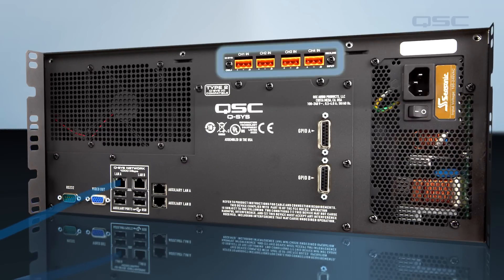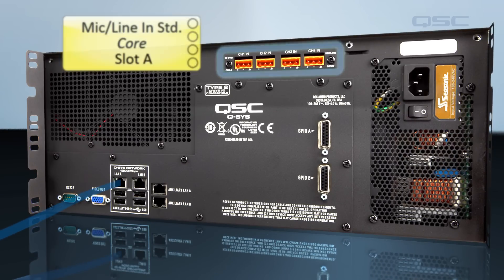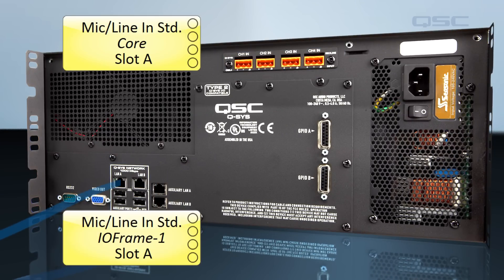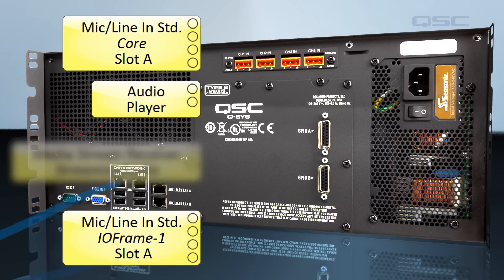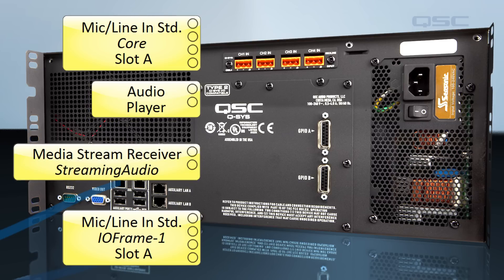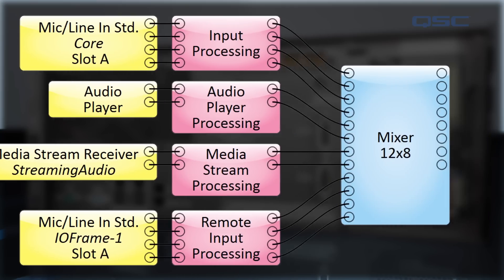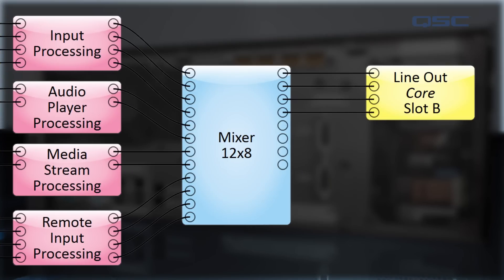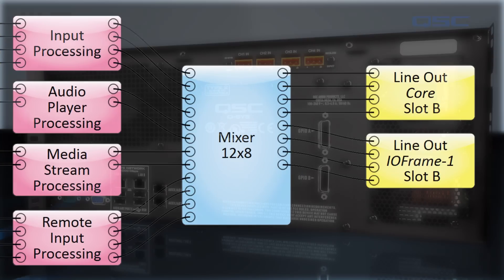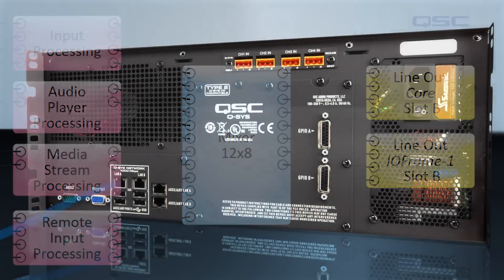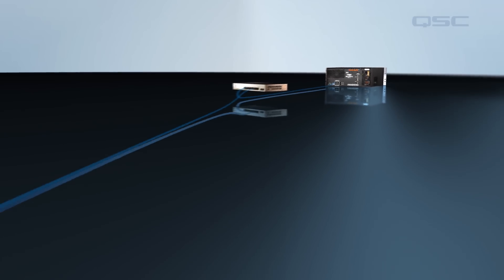The core receives all the audio from its inputs, the network inputs, and other sources such as its own audio player or external streaming sources on the network, and then processes these channels according to your design. After it's done, it routes the output signals to the appropriate destinations. This may be an output on the core itself, or it may send it back out over the network to another I/O card on an I/O frame.